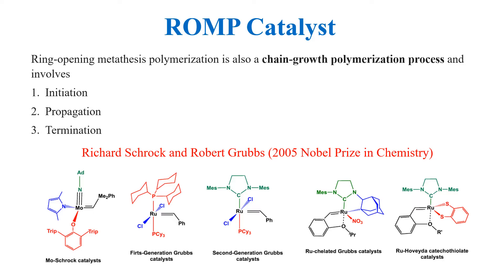The catalysts used to initiate the polymerization are transition metal compounds, typically titanium, tantalum, tungsten, molybdenum and ruthenium compounds. These catalysts are also known as Schrock and Grubbs catalysts.